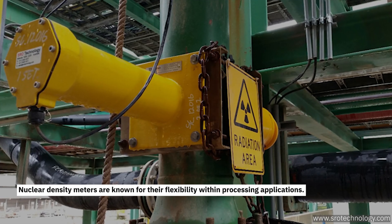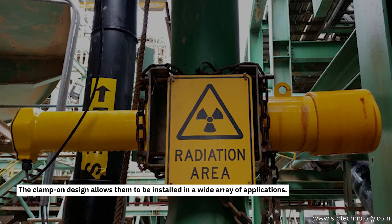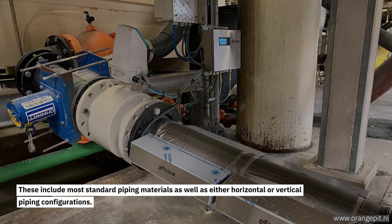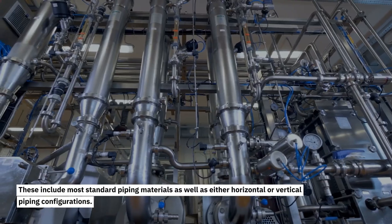Nuclear density meters are known for their flexibility within processing systems. The clamp-on design allows them to be installed in a wide array of applications. These include most standard piping materials, as well as either horizontal or vertical pipe configurations.